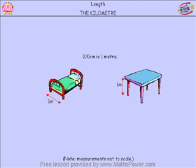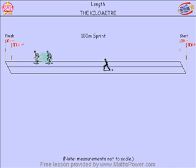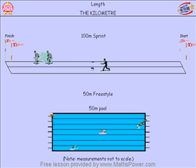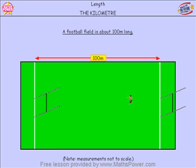What if we wanted to measure things that were really long? Well, we know how far we run for a 100 metre running race, or how long a 50 metre swimming pool is. That's quite a big swimming pool, isn't it? A football field is about 100 metres long, so we would need 100 one-metre pieces of string put end to end to cover the length of a football field.